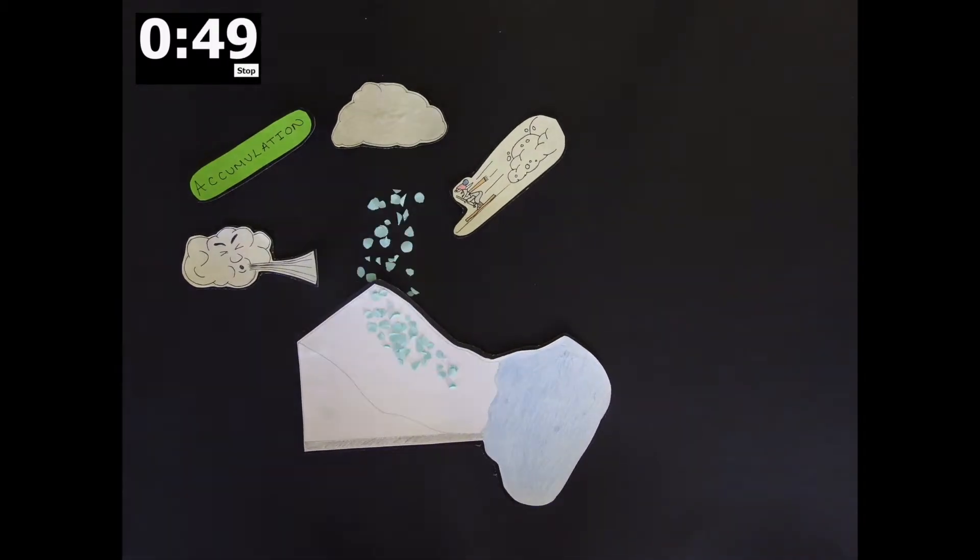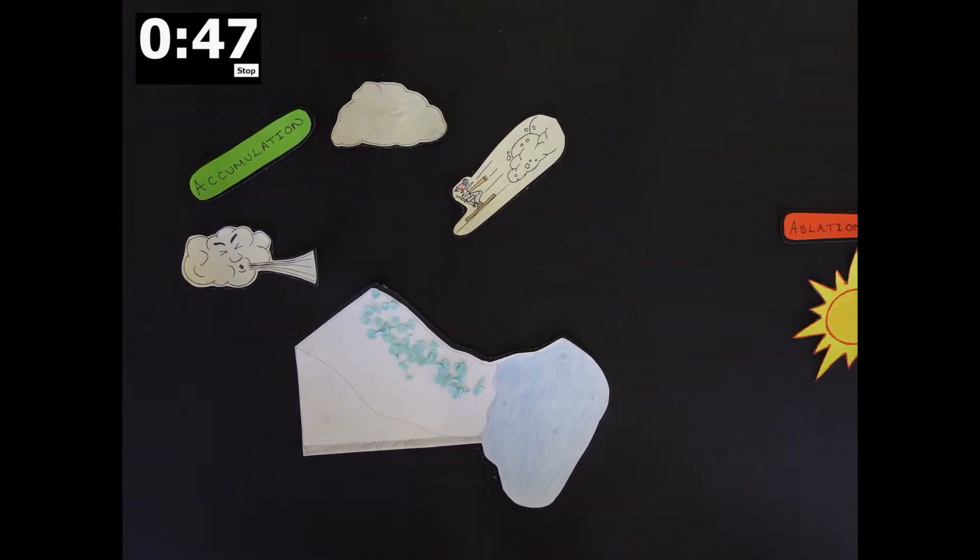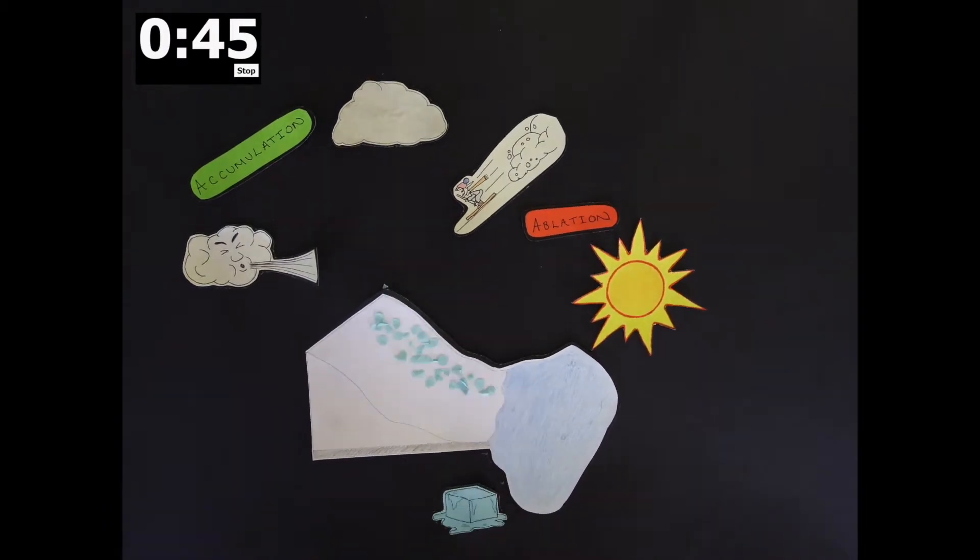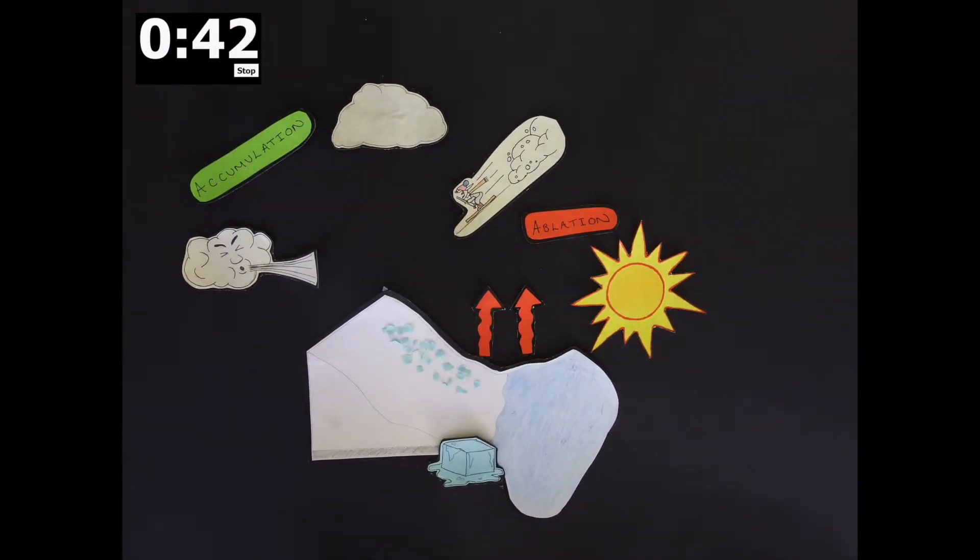Once this snow is deposited onto the glacier, it is transported down valley into the ablation area. Here mass loss occurs through melting, evaporation, and iceberg carving.